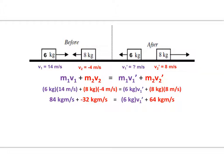So when you do all of your multiplication, we have eighty-four kilogram meters per second plus a negative thirty-two kilogram meters per second is equal to six kilograms times the velocity plus sixty-four kilogram meters per second.